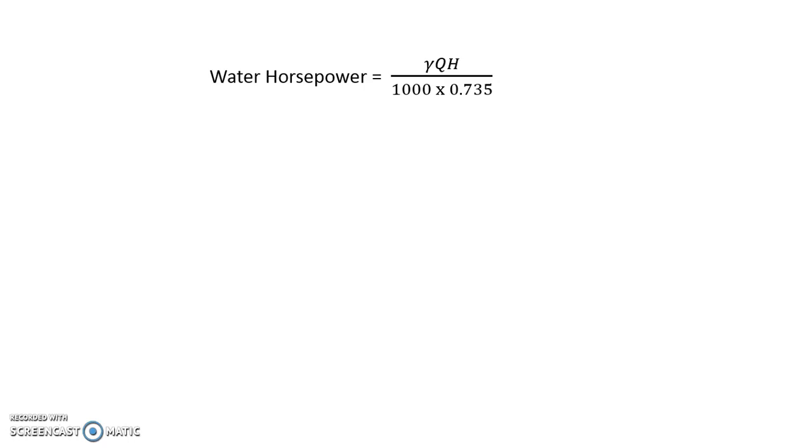Now what next? We'll calculate water horsepower. Water horsepower is γQH divided by 1000 × 0.735. Now here γQH by 1000 will yield the value in terms of kilowatts, divided by 0.735 will ultimately will give you the value in terms of horsepower. So it's around 29.62 horsepower by making the substitution for Q equals to the discharge, H is the total head, and γ for water is 9810 newton per meter cube.